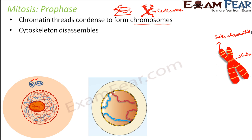Next, the cytoskeleton disassembles. The cytoskeleton is the skeletal framework of the cell, made up of microfilaments and microtubules. So here the cytoskeleton disassembles and those microtubules will get utilized in another way.